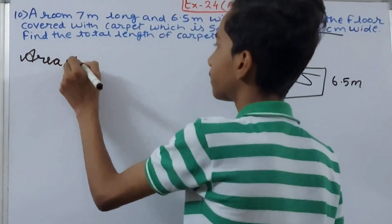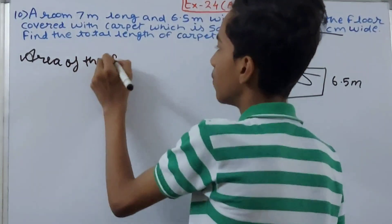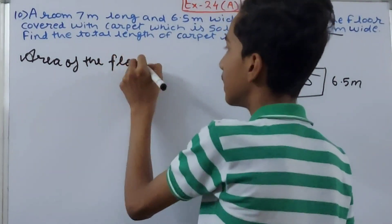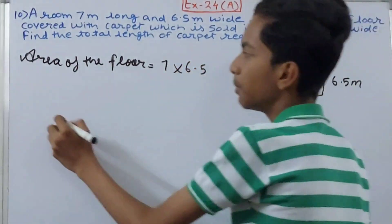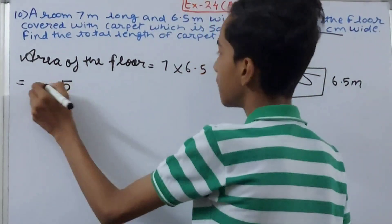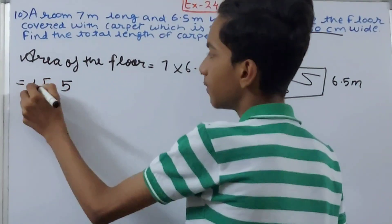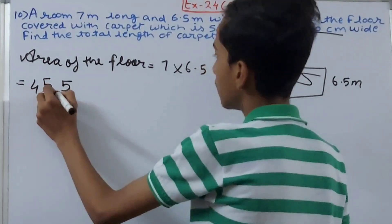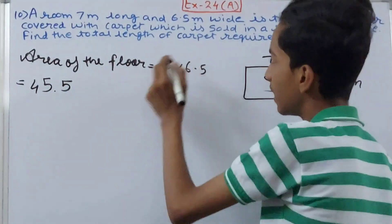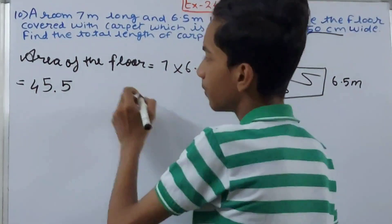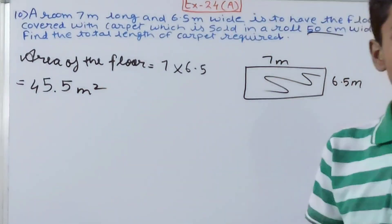First we will find the area of the floor. This will be 7 into 6.5. How much is that? 7 into 5 is 35, 5 and 3 is 42 and 3 - that's 45.5 square meters. This is the area of the floor.